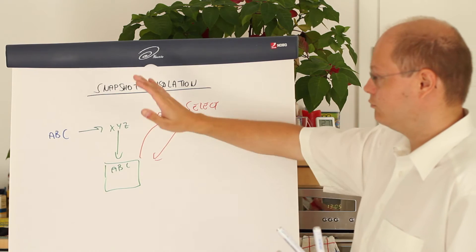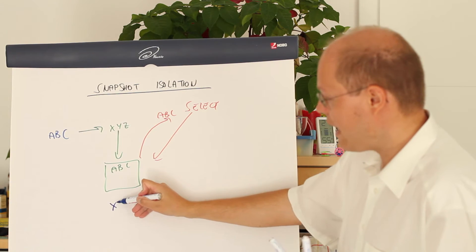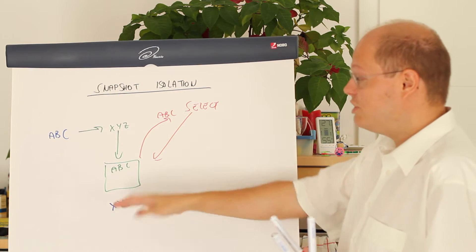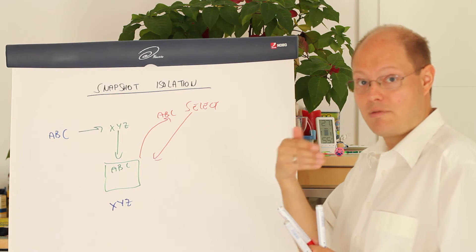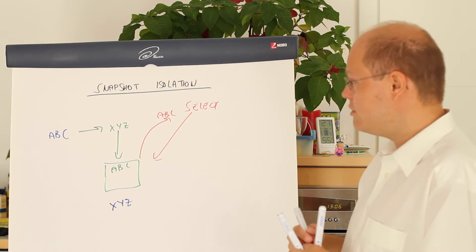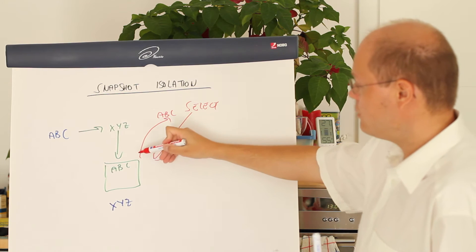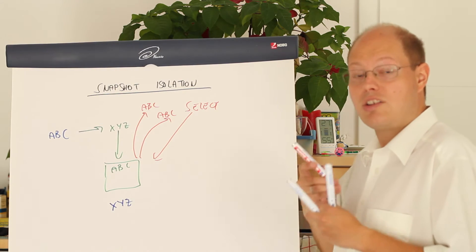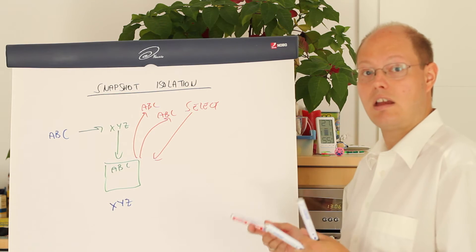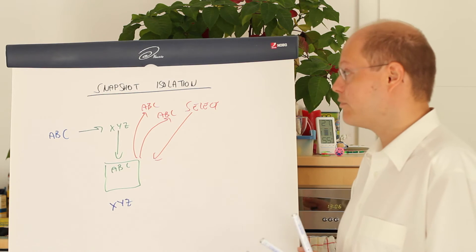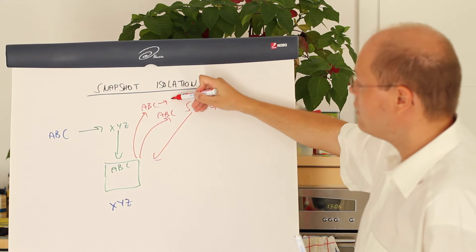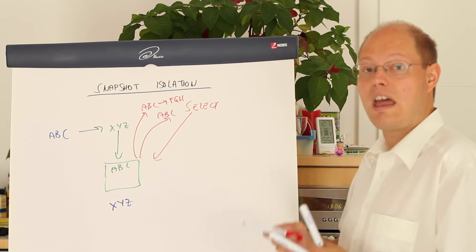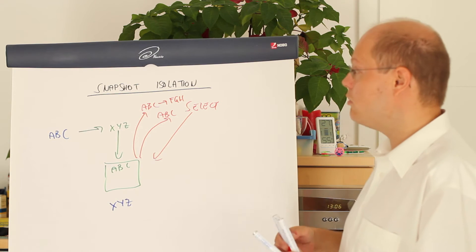When the other transaction commits and 'xyz' becomes the new value, the select statement is still not able to see that new value, because the value that was valid at the beginning of that transaction was 'abc'. When you read again within that transaction, you again get back 'abc'. As you can see, Snapshot Isolation provides you a read stability in an optimistic way without locking.